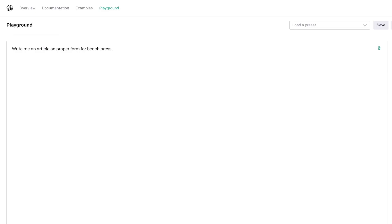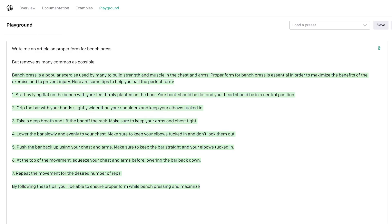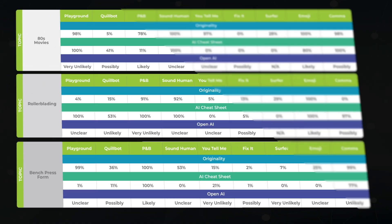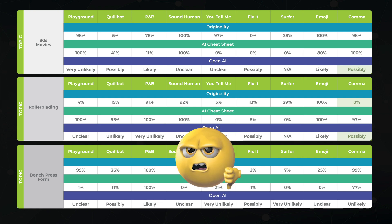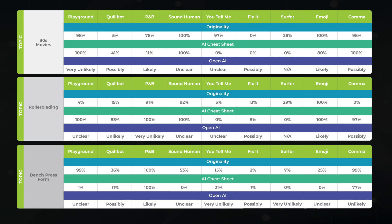Next, the comma trick: write me an article on proper form for Benchpress, but remove as many commas as possible. The comma technique seems to work on Originality and OpenAI's detector in a test case or two, but it's definitely not consistent enough to add to your process. Now we're about to get into why this all matters, but let's take a look at the final results.